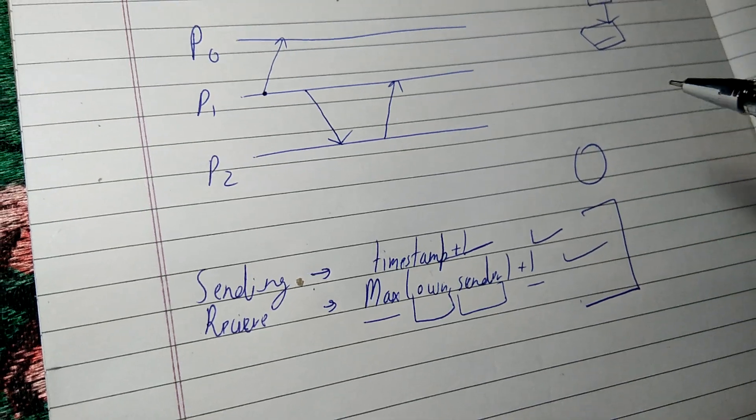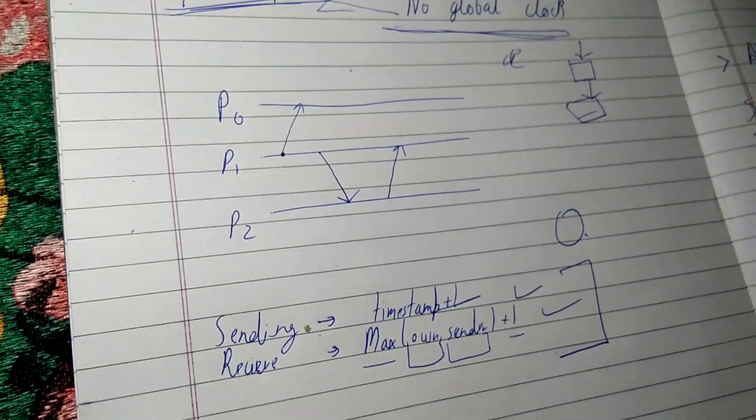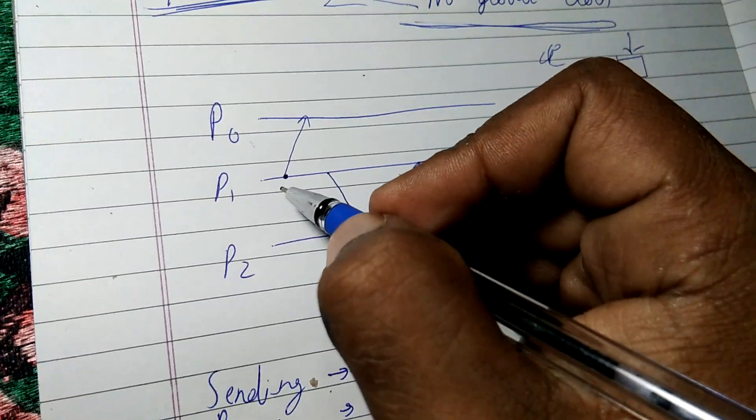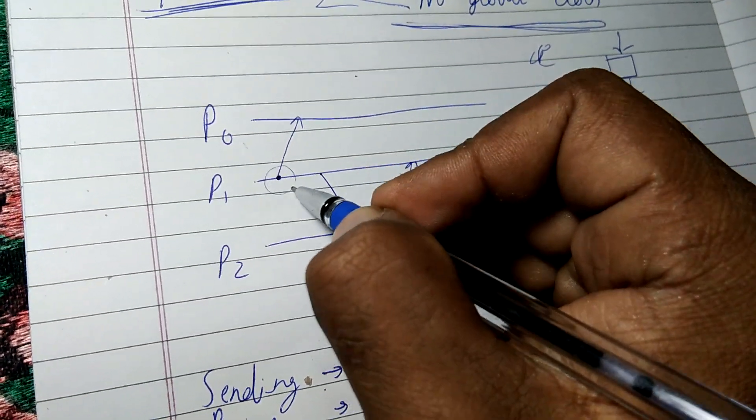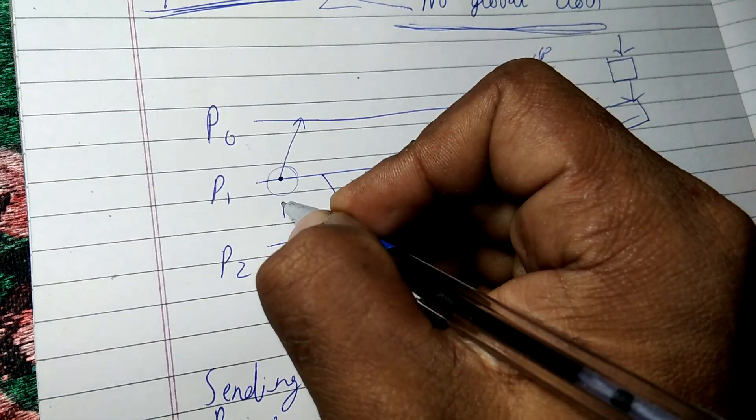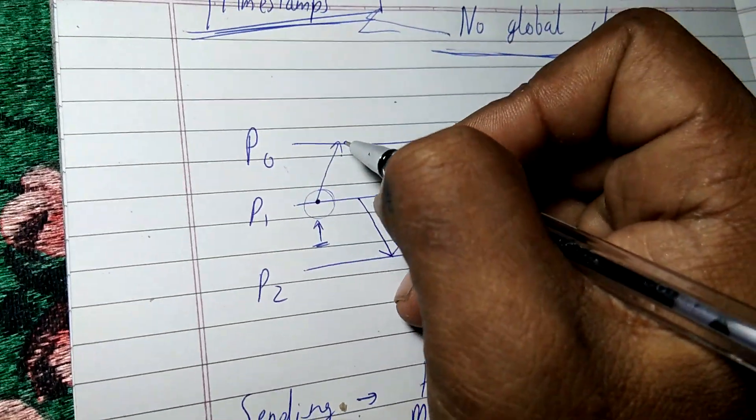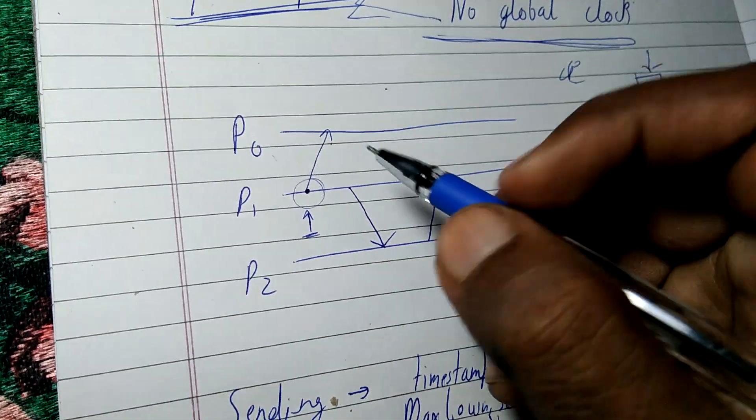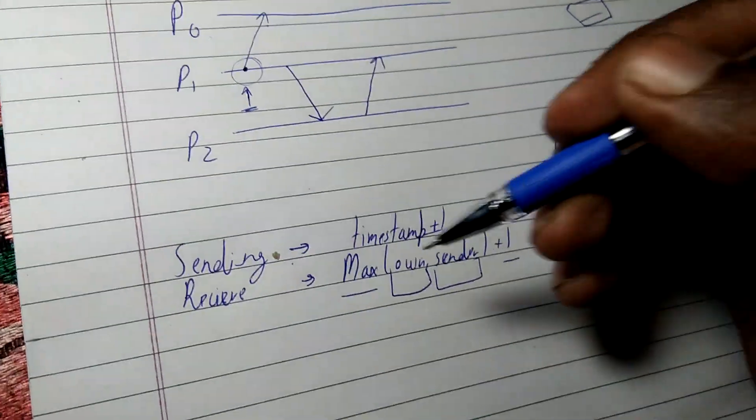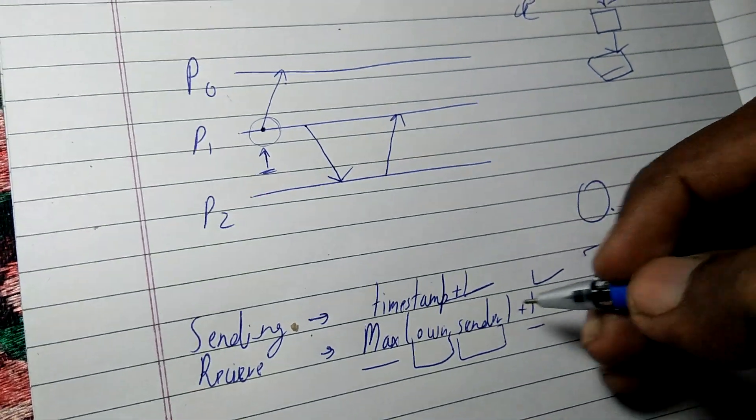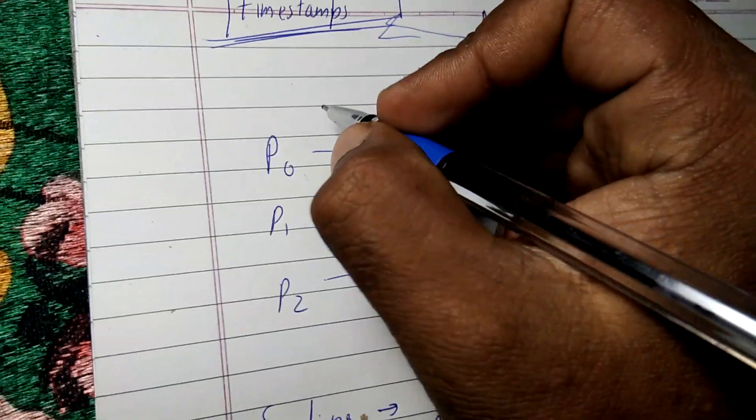These are the two rules we have to follow. We have to consider 0 at first. If this is process P0, P1, and P2, we can see that P1 is occurring first, so we can assign a timestamp of 1. Now P0 is receiving. P0 presently has timestamp 0 and P1 has 1, so with this formula we can say 0 and 1, so we can take it as 1 plus 1, that is 2.